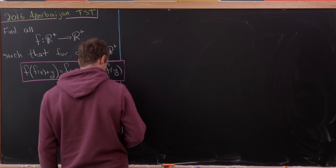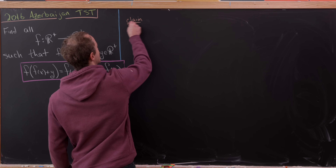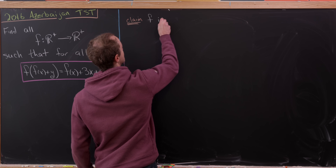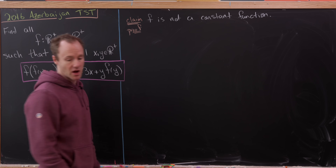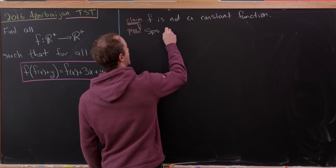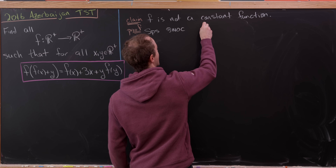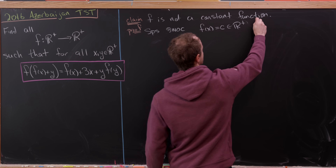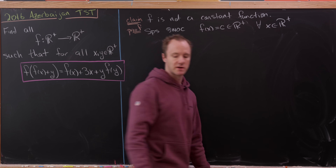The first thing we're going to do is prove a little claim: f is not a constant function. The proof will go by way of contradiction. So let's suppose that f(x) equals some constant c, which is a positive real number, for all x, which is also a positive real number.